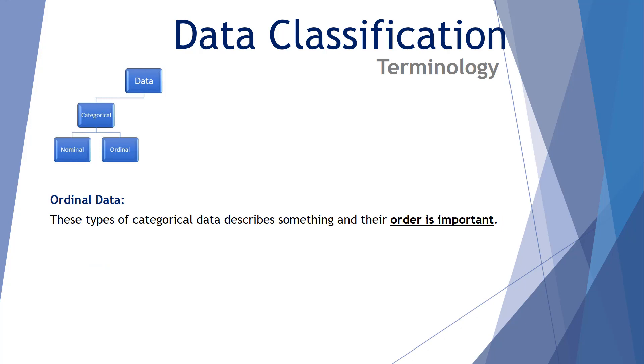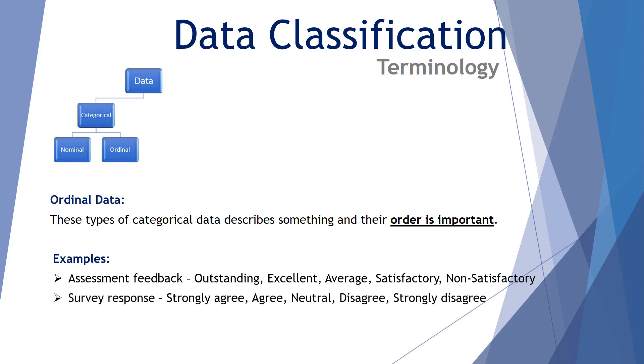Also under the subheading of categorical data is ordinal data. These types of categorical data describe something again, however their order is important, hence the name ordinal. Some examples of ordinal data: assessment feedback. You might receive the following information that your work is outstanding, excellent, average, satisfactory, non-satisfactory. There's a distinct order ranking that data. Also a survey response where you strongly agree, agree, neutral, disagree, strongly disagree. In both of these examples the order of the data is important. It's categorical and it's ordered. So we call it categorical data under the subheading of ordinal data.